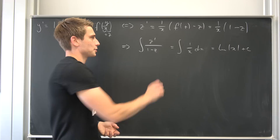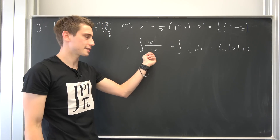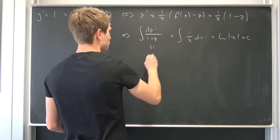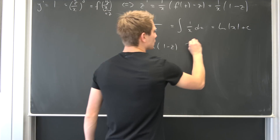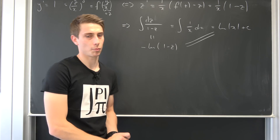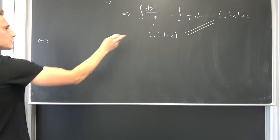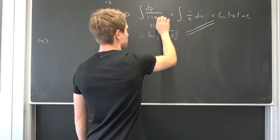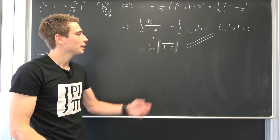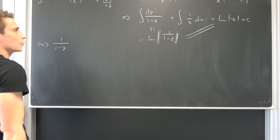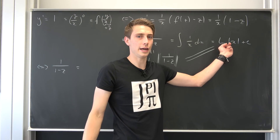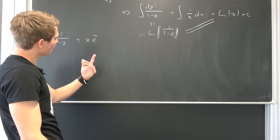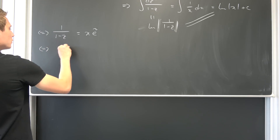We can introduce a substitution to make the left side into dz over (1 minus z). With another substitution, as I have derived before (link in the description), this evaluates to the negative natural log of |1 minus z|. This equals ln(x) plus c. Using exponentiation on both sides: bringing the minus sign in gives (1 minus z) to the negative one, so 1 over (1 minus z). With absolute values, applying exponentiation gives us 1 over (1 minus z) equals x times some arbitrary constant e-tilde.